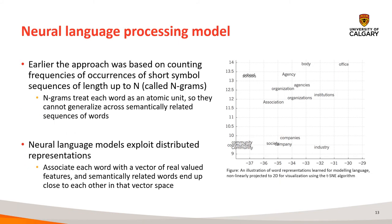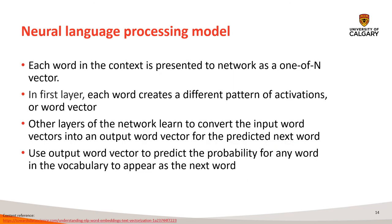Before neural language models, the standard approach to statistical modeling of language was based on counting frequencies of occurrences of short symbol sequences of length up to n, called n-grams. N-grams treat each word as an atomic unit, so they cannot generalize across semantically related sequences of words. Neural language models, however, exploit distributed representations: each word is associated with a vector of real-valued features, and semantically related words end up close to each other in that vector space. Each word in the context is presented to the network as a 1-of-n vector, creating a different pattern of activations or word vector. Other layers convert the input word vectors into an output word vector for the predicted next word, which can be used to predict the probability for any word in the vocabulary to appear next.